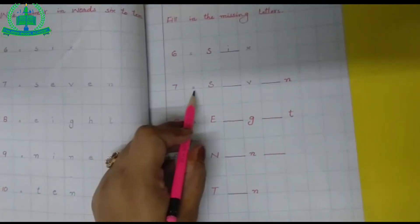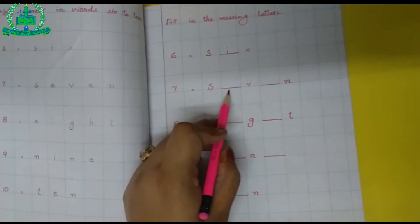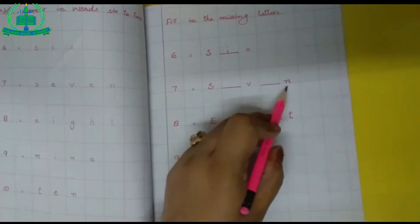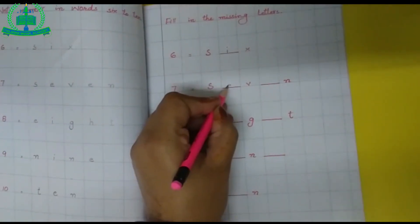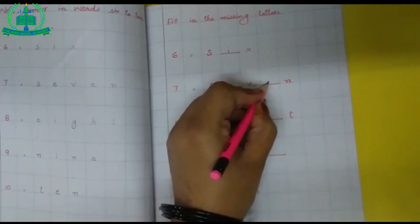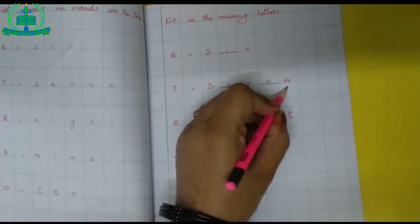Seven is equal to S blank V blank N. S-E-V-E-N. Seven.